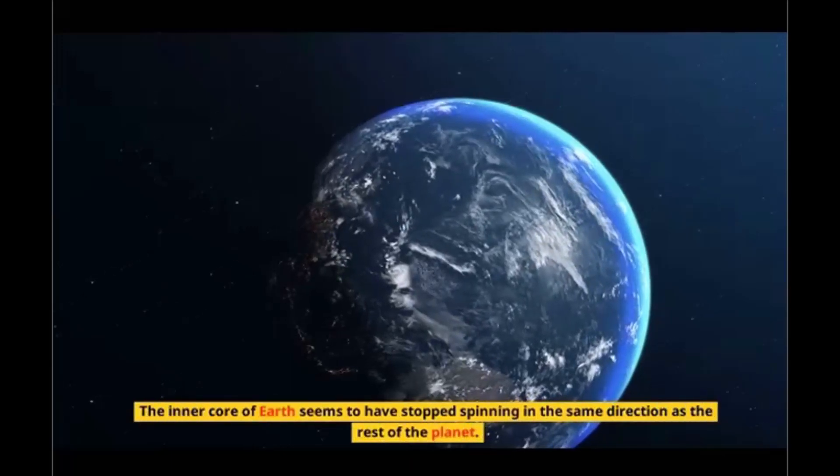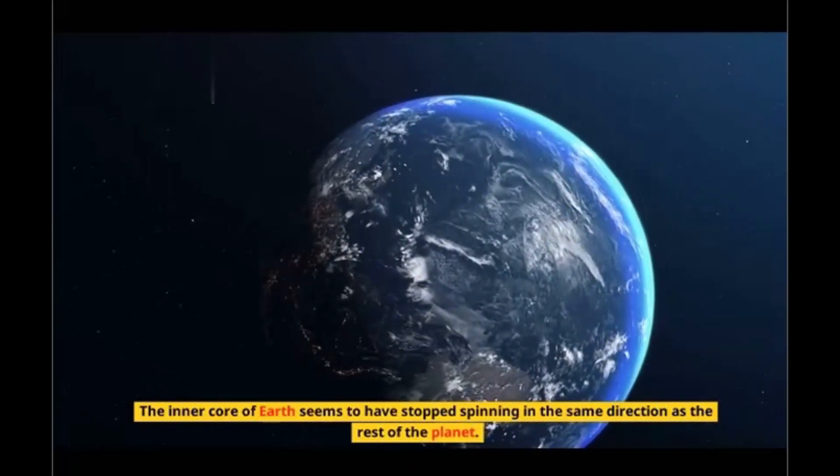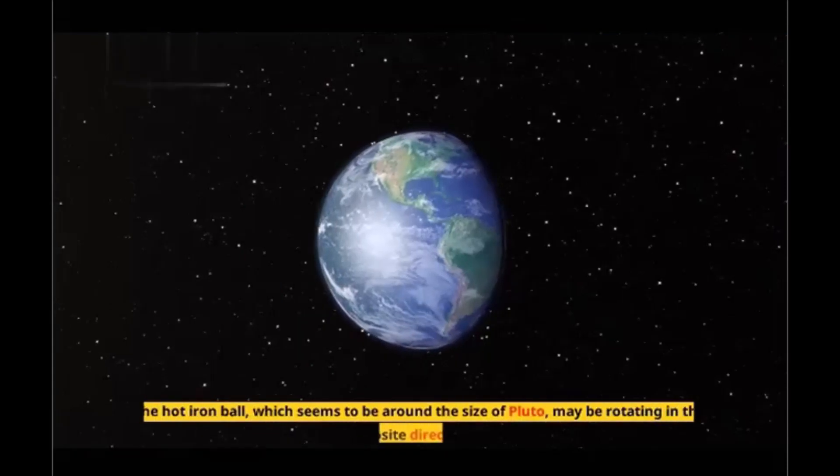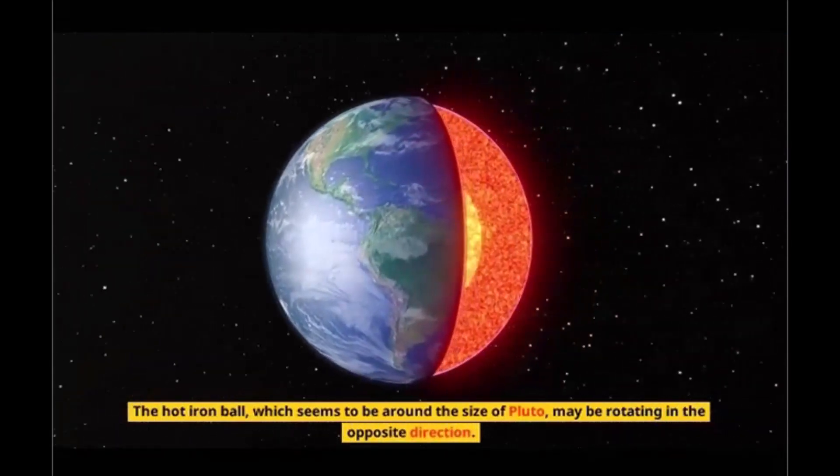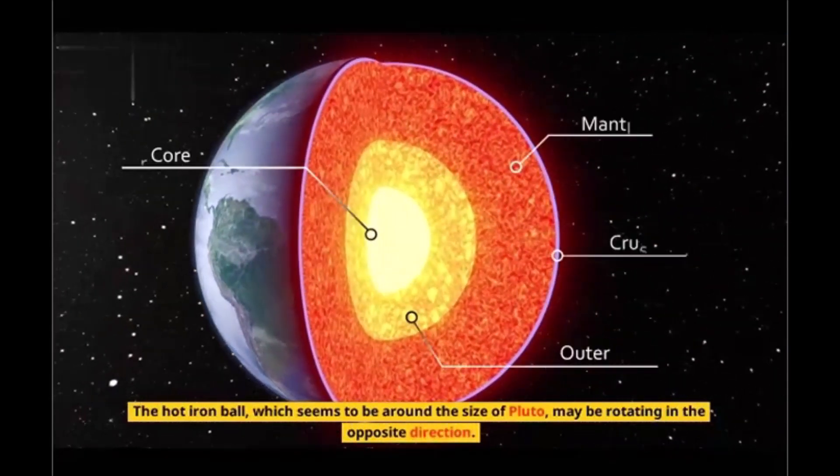The inner core of Earth seems to have stopped spinning in the same direction as the rest of the planet. The hot iron ball, which seems to be around the size of Pluto, may be rotating in the opposite direction.